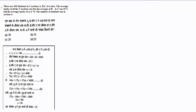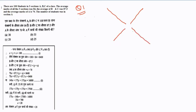Now, question number one belongs to the topic of averages. All questions of average can be solved by one method, that is the allegation method. In the allegation method, the whole part is divided between two parts.